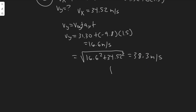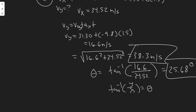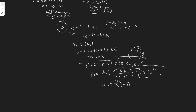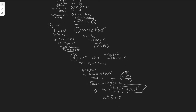We can also find the angle relative to the horizontal: θ = arctan(Vy / Vx) = arctan(16.6 / 34.52) = 25.68 degrees. So the velocity is 38.3 m/s at 25.68 degrees above the horizontal. These are the answers: A = 49.98 m, B = 6.39 s, C = 221 m, and D = 38.3 m/s.